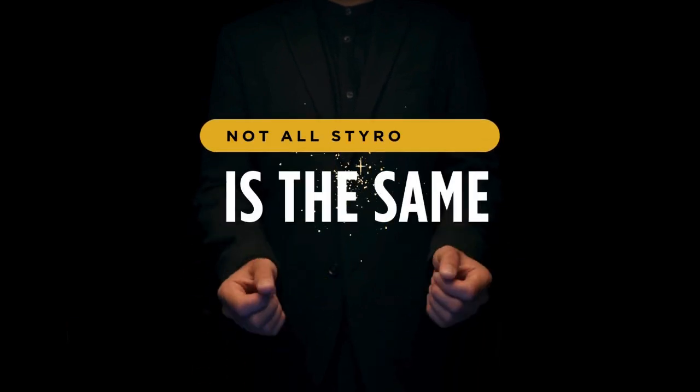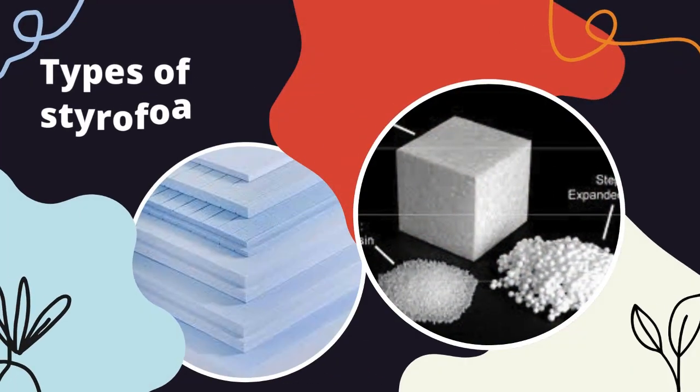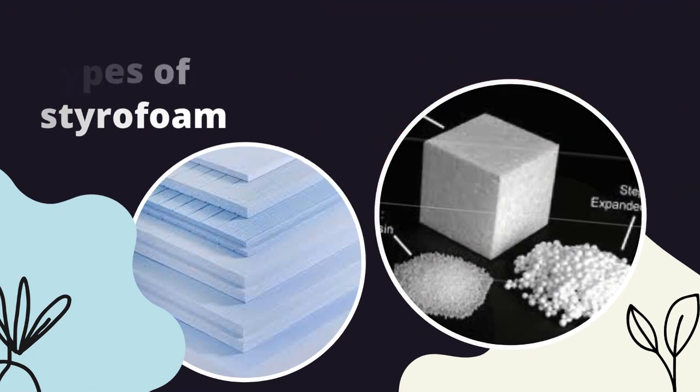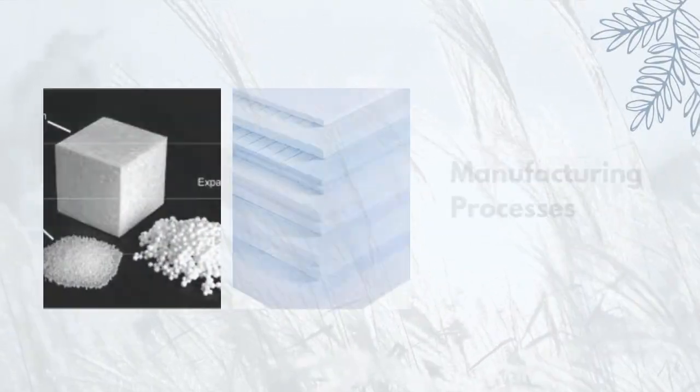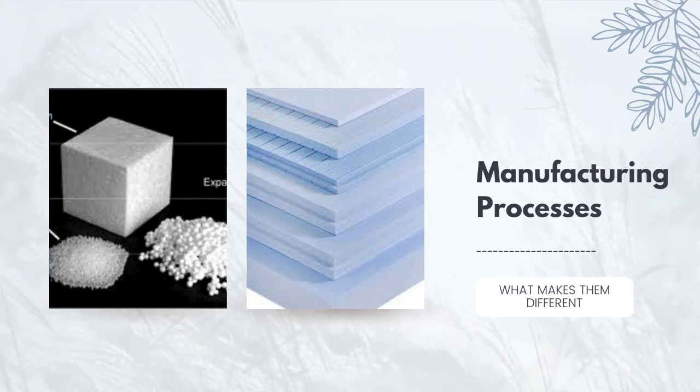Not all styrofoam is the same. There are two main types: expanded polystyrene (EPS) and extruded polystyrene (XPS). They are very similar in terms of raw materials, though what makes them very different is their manufacturing processes, which give both their distinct properties. EPS is made through the bead expansion process described earlier, and is lightweight, cost-effective, and commonly used for packaging, disposable containers, and lightweight construction. XPS, on the other hand, is made using a continuous extrusion process, creating dense, water-resistant sheets ideal for insulation and building applications.